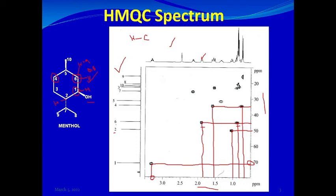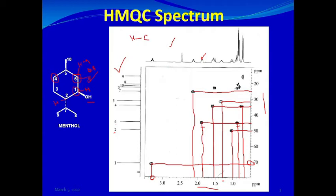Carbon number five is a CH. This carbon resonates at about 32 ppm and its attached proton resonates at about 1.3 ppm. Carbon number seven is also a CH; it resonates at about 25–26 ppm, and its proton resonates at about 2.1 ppm. You can use a ruler to draw straight lines horizontally and vertically to read these correlations accurately.